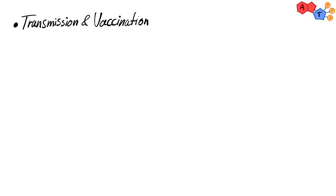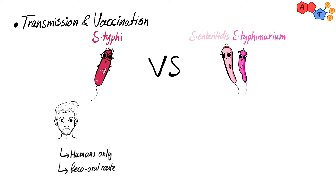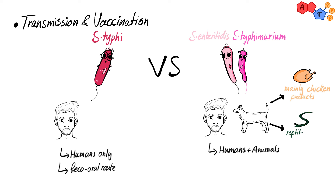To complete our discussion about Salmonella, we need to talk about transmission. For Salmonella typhi, it's only found in humans, so it's transmitted by the feco-oral route. For the non-typhoidal ones, they are found in animals as well as in humans, and they are mainly transmitted through chicken products, but they can also be transmitted by reptile pets like snakes and turtles.